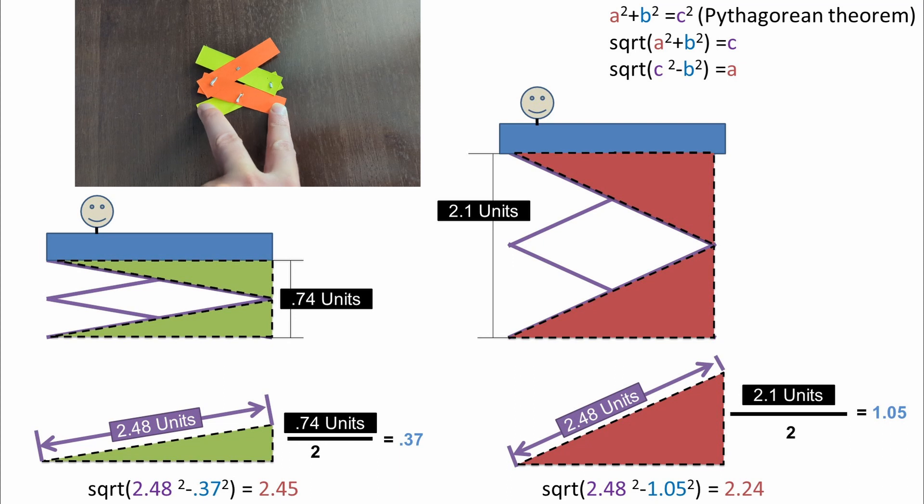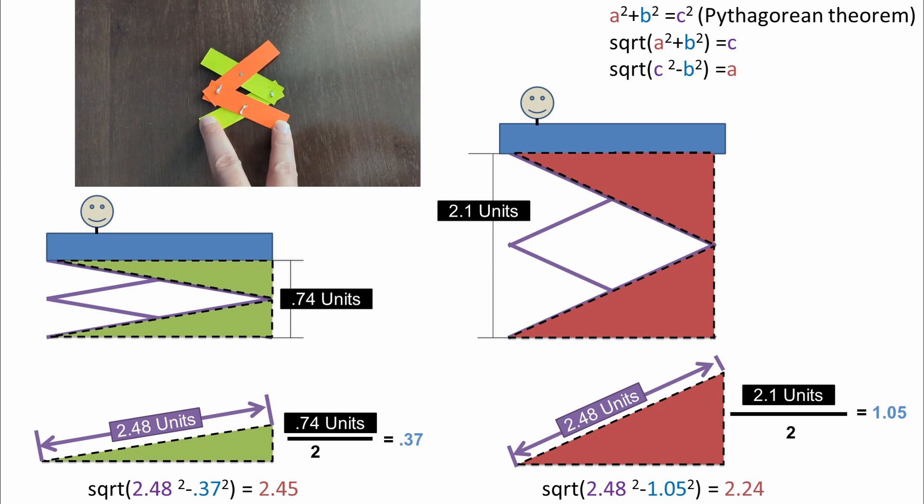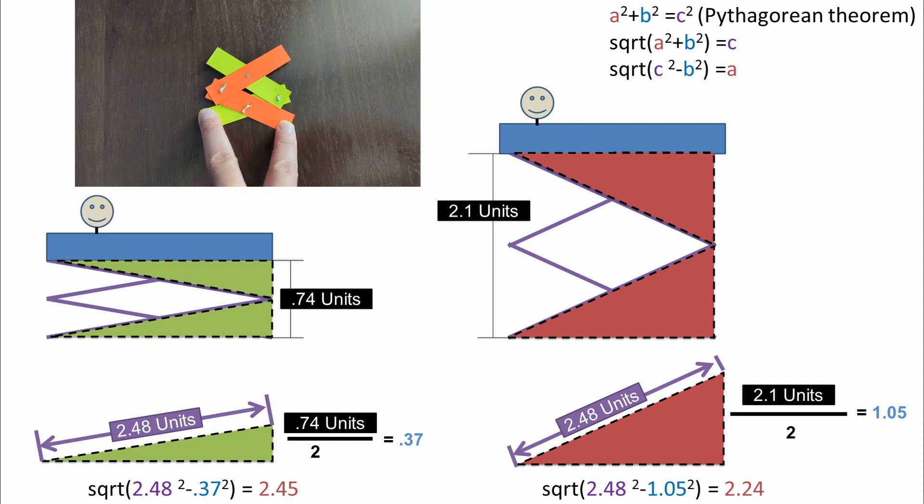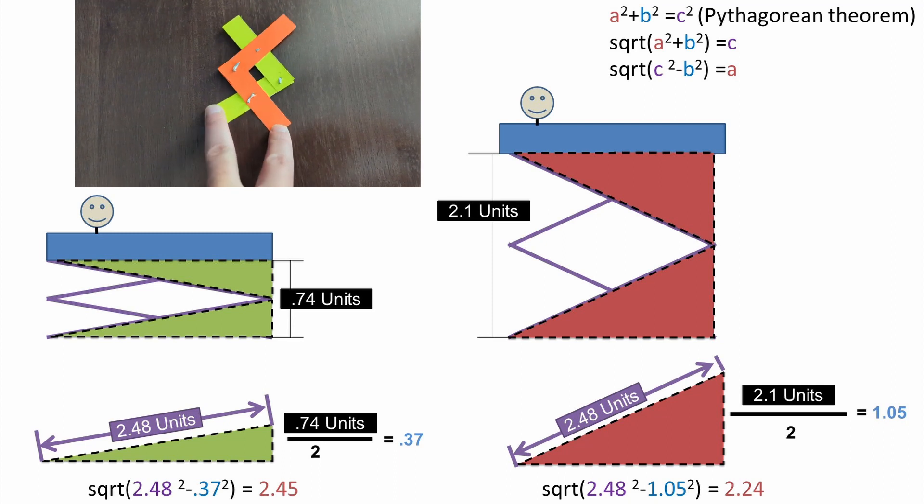Plugging in our numbers, we get 2.45 units for the initial span and 2.24 units for the final span.